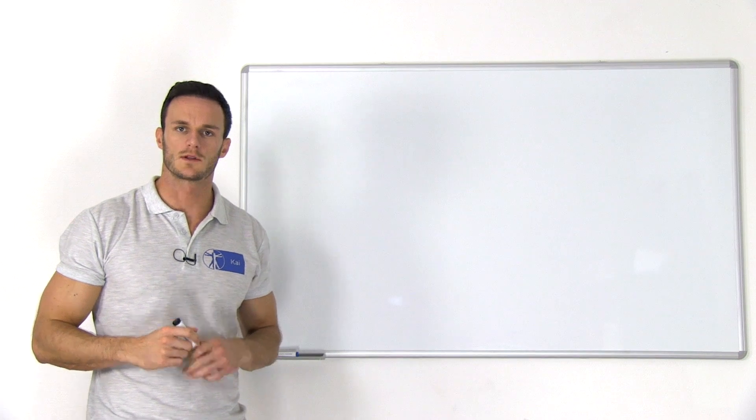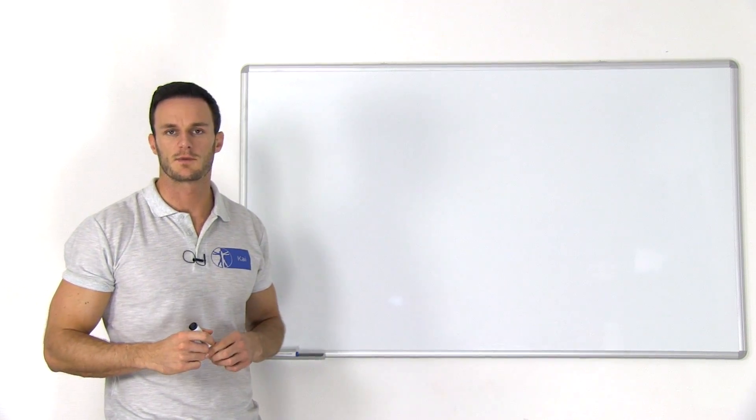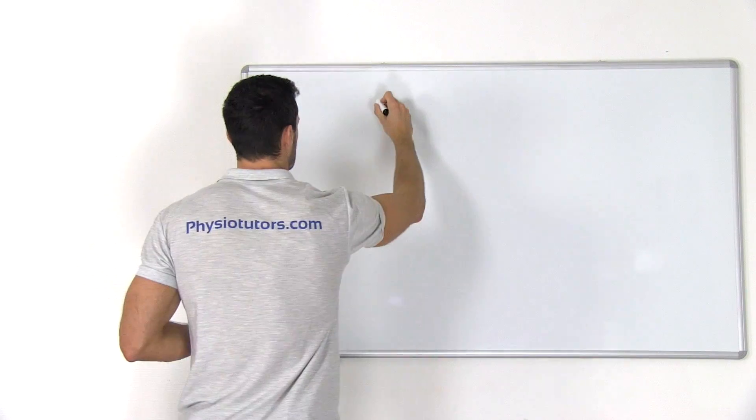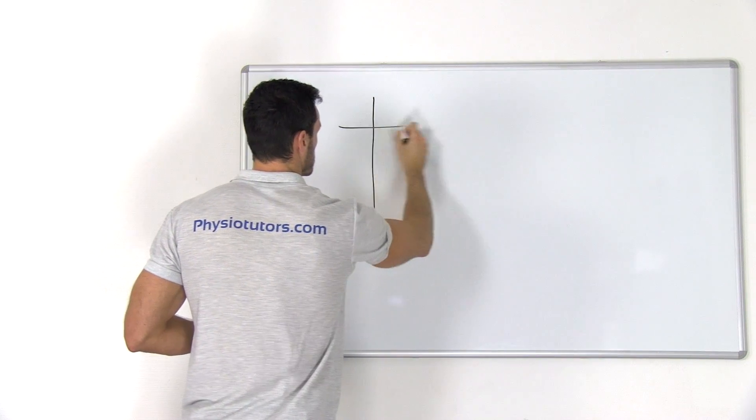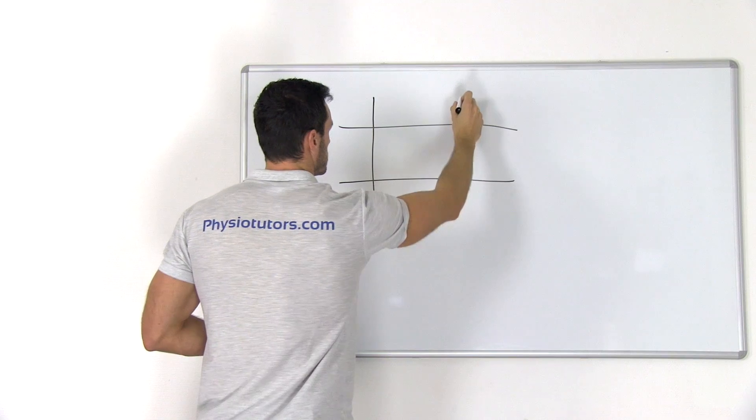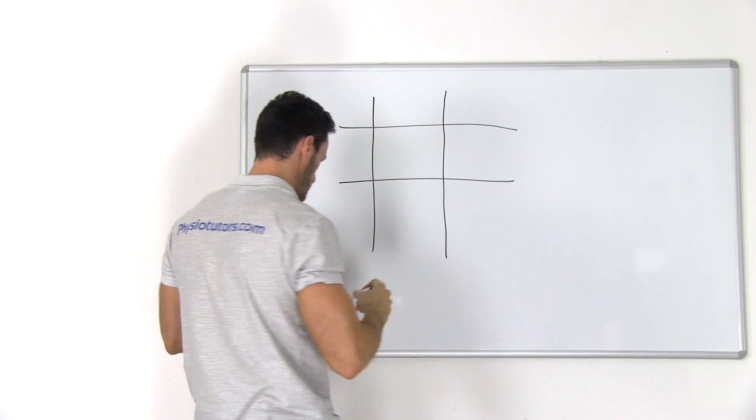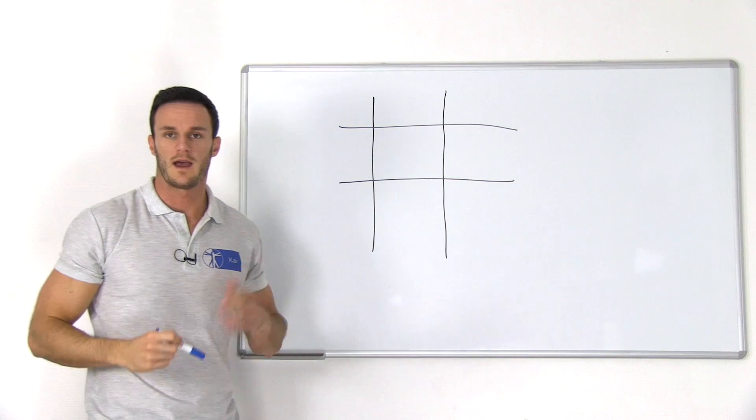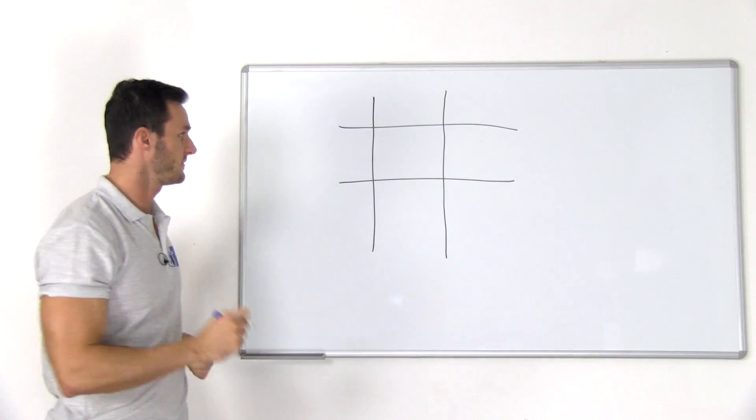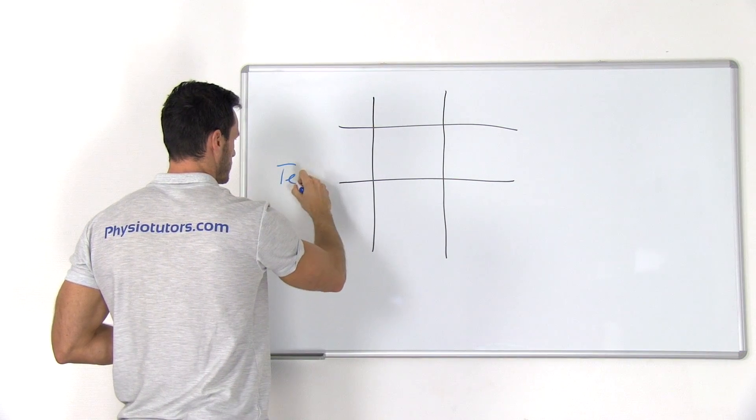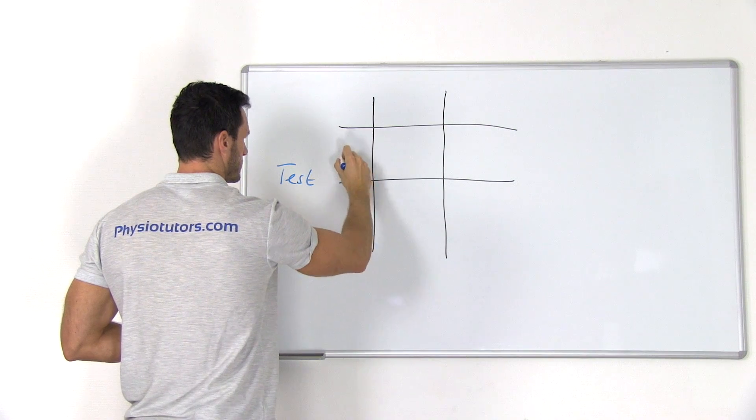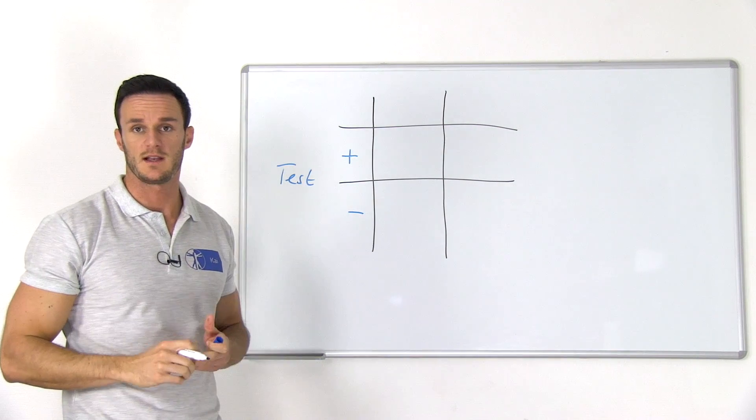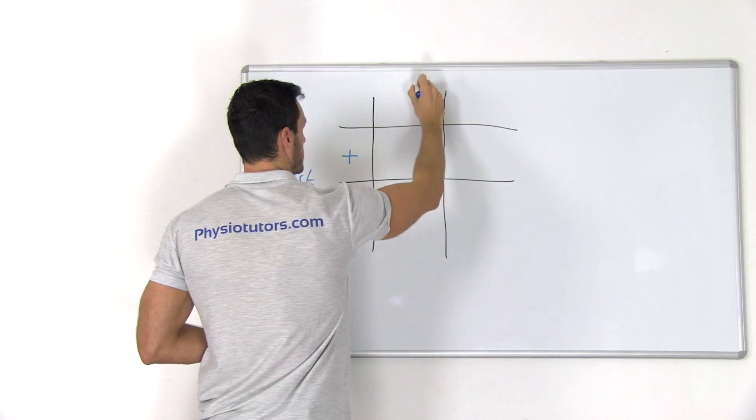Now, let's draw a two by two, or so-called truth table, that helps us with the definitions as well as with the calculations. So on the left side, we have the test with a positive and a negative outcome. And on top, we have the disease state, also with a positive and a negative outcome.